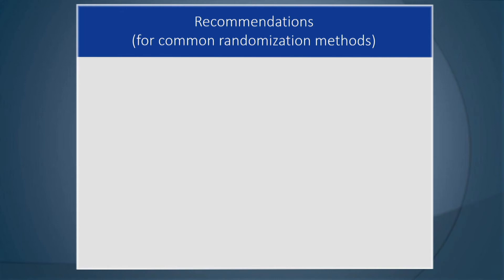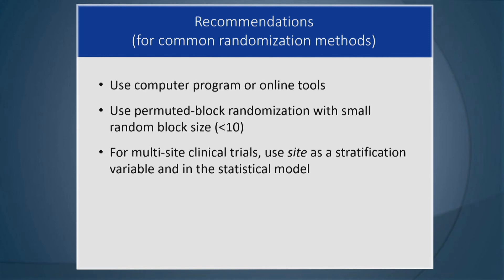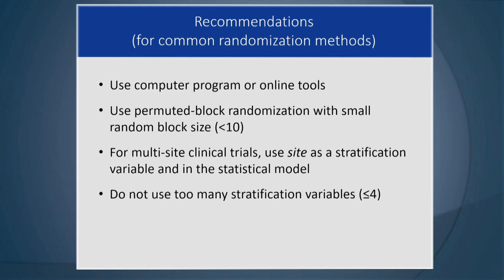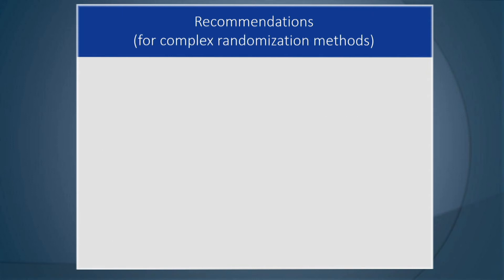Recommendations for common randomization methods: use a computer program or an online tool. Use permuted block randomization with small random block size, less than 10. For multi-site clinical trials, use site as a stratification variable in the statistical model. Do not use too many stratification variables — less than or equal to four. Unless necessary, avoid response adaptive randomization methods — the kind that looks at responses and changes allocation probabilities. For complex randomization methods, consult with a biostatistician.